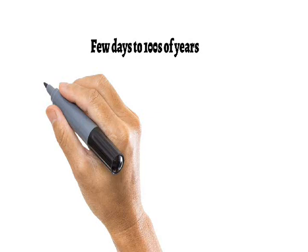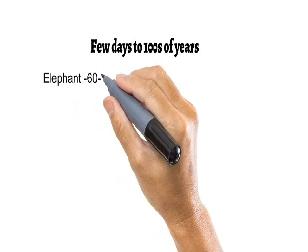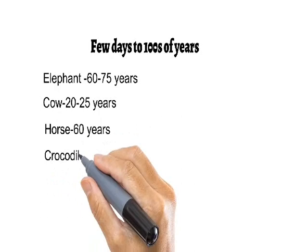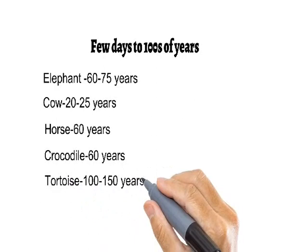Elephant lives for 60 to 75 years. Cow for 20 to 25 years. Horse for 60 years. Crocodile lives for 60 years. Tortoise for 100 to 150 years, and dog for 15 years.